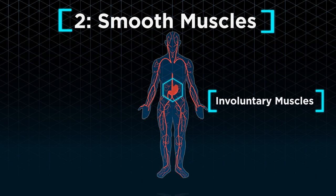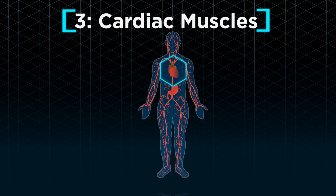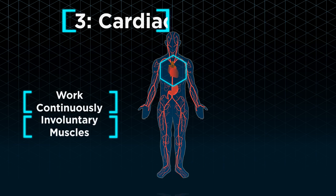Cardiac muscles that make up our heart are able to work continuously without tiring. Like smooth muscles, cardiac muscles are also involuntary. We cannot make our heart work faster or slower.